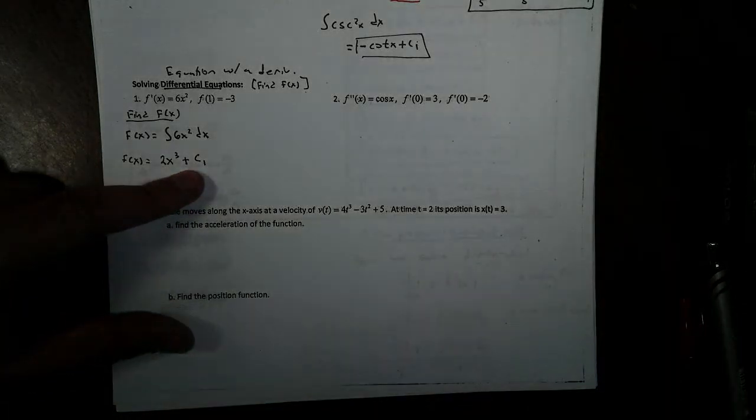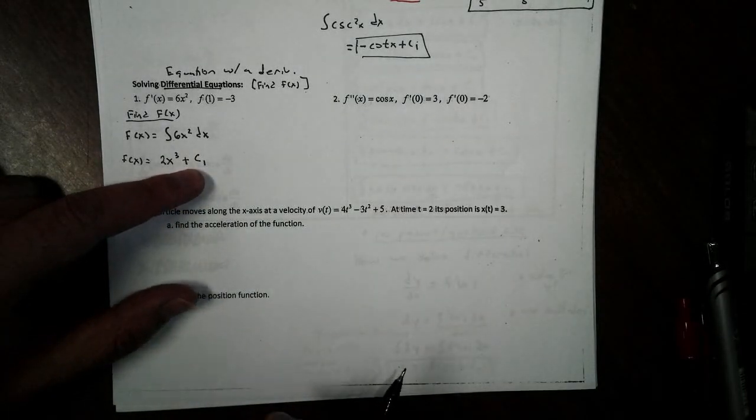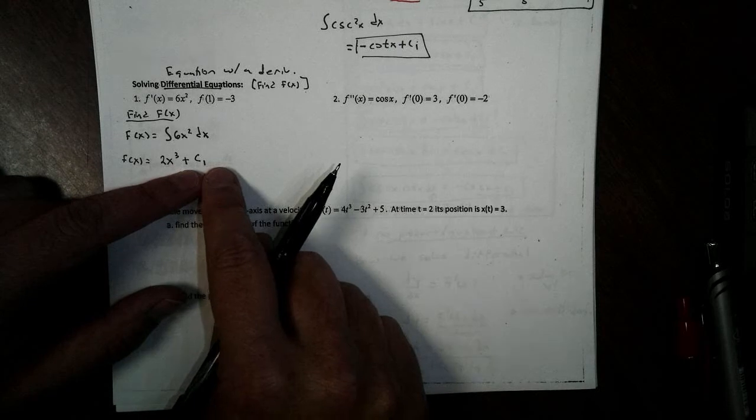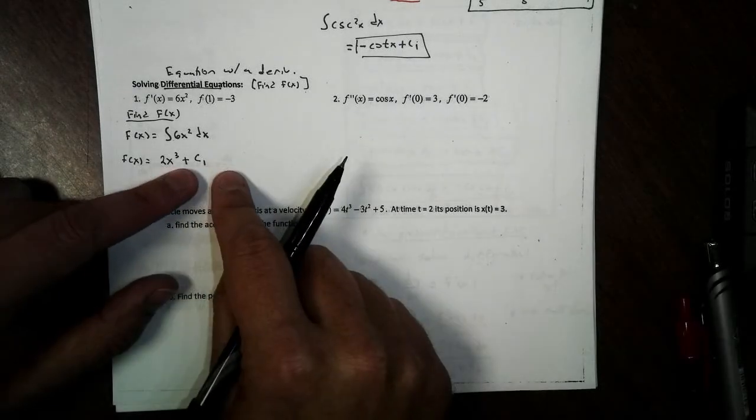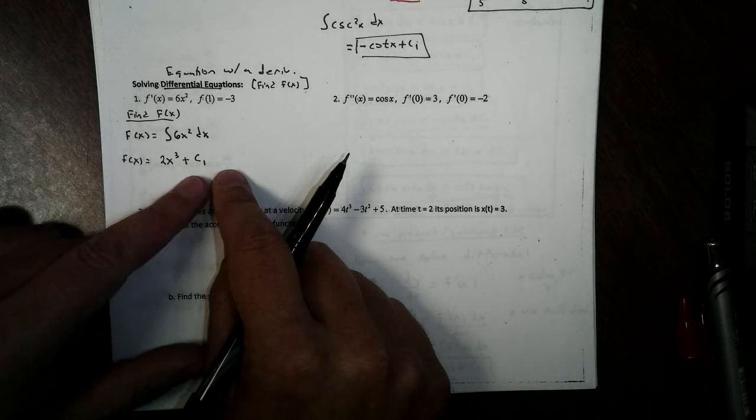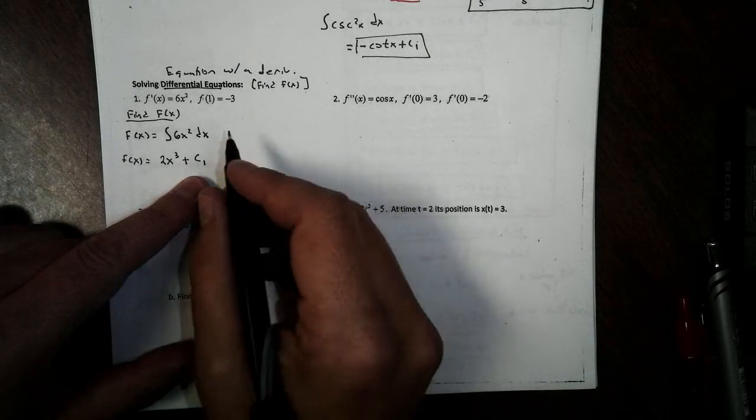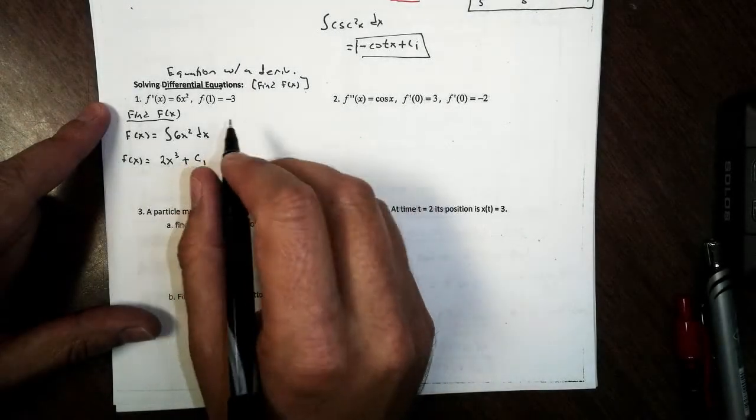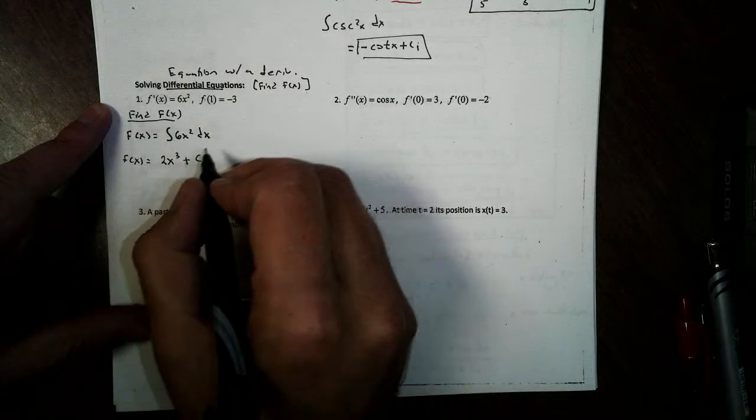Now, remember that c1. This says that this is not a unique function. We call this, if you might remember, an indefinite integral. So now we're going to find c1.